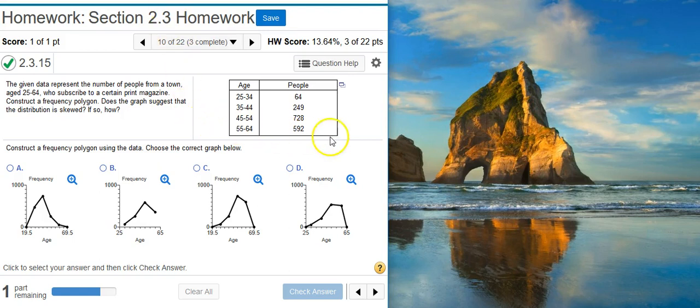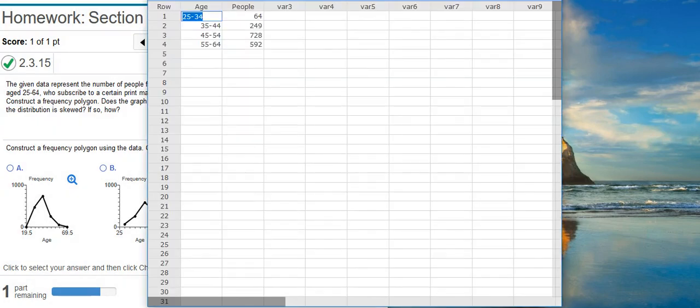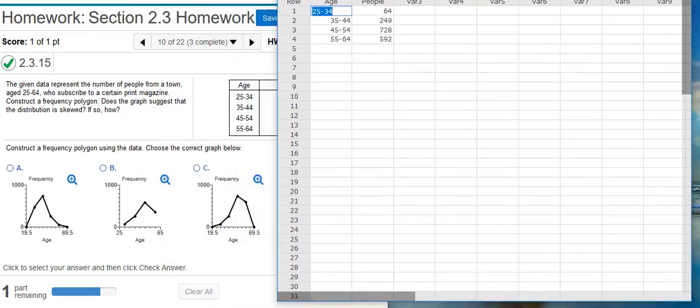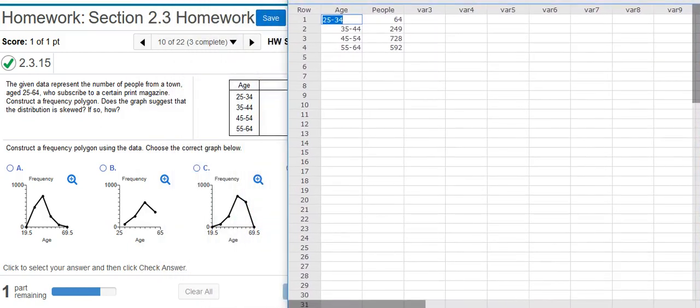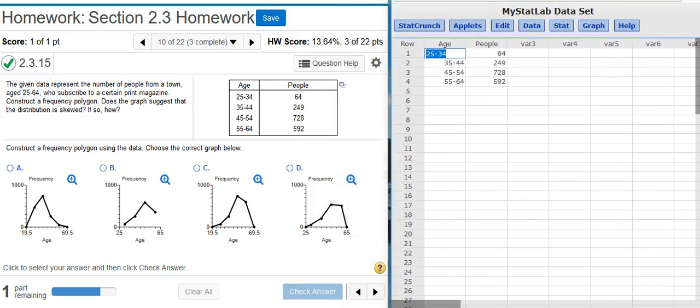The first thing we need to do for this first part that's asking us to construct the frequency polygon is take the data and put it into StatCrunch. So here I've got my data in StatCrunch. I'm going to resize this window so we can see better everything that's going on.